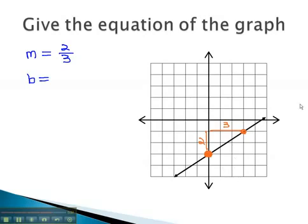The y-intercept is where the graph crosses the y-axis. In this case, it crosses the y-axis at negative 3. The y-intercept is negative 3.